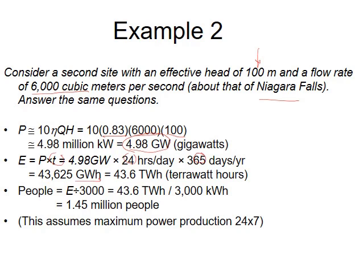Multiplying 4.98 gigawatts by 24 hours and 365 days gives a large annual energy figure. Dividing by 3000 kilowatt-hours per person gives 1.45 million people. And remember, this plant works 24 hours a day — unlike solar or wind, which are sometimes unavailable.